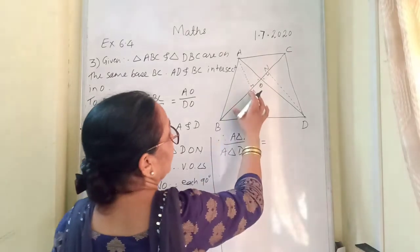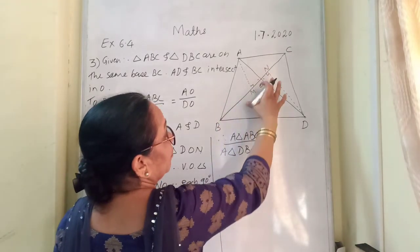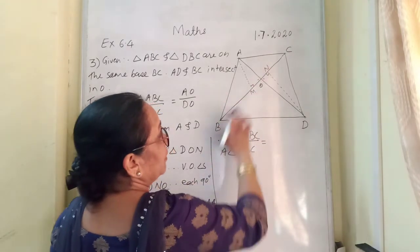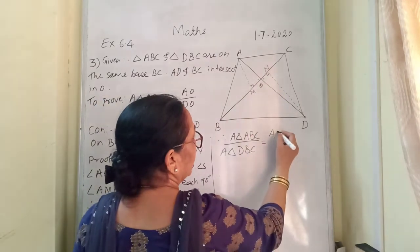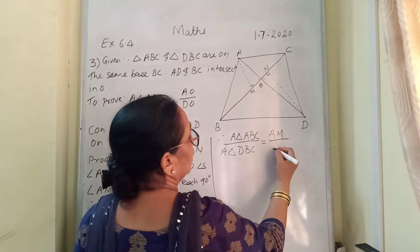Therefore here area triangle ABC, here base is BC, and for DBC base is BC, so it will be equal to AM upon DN.